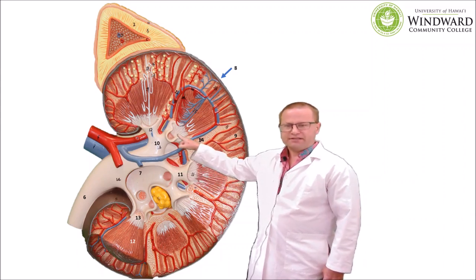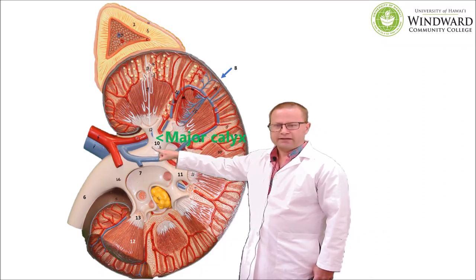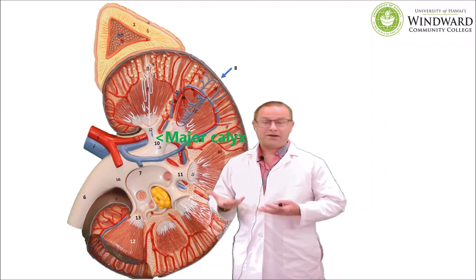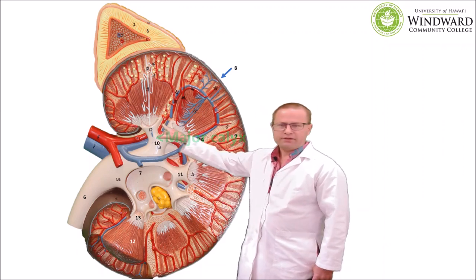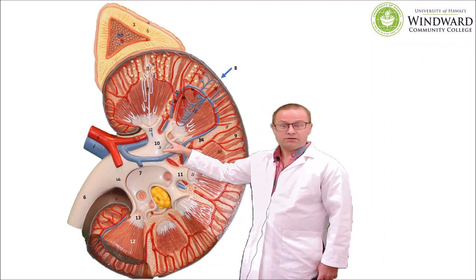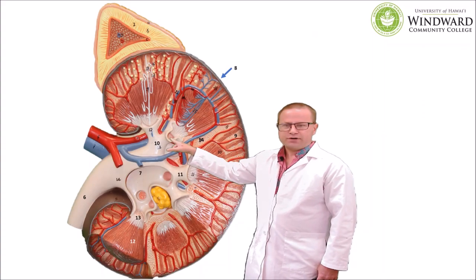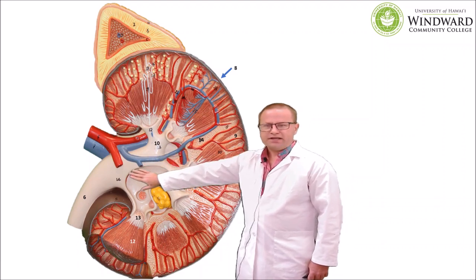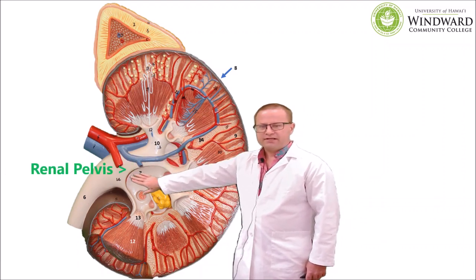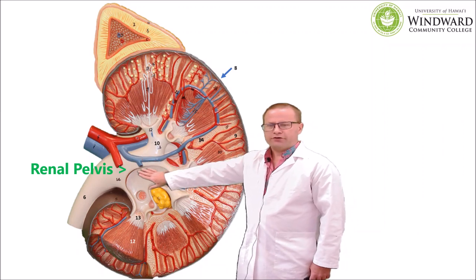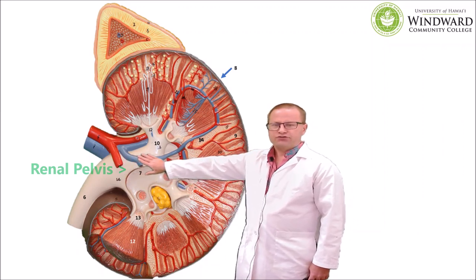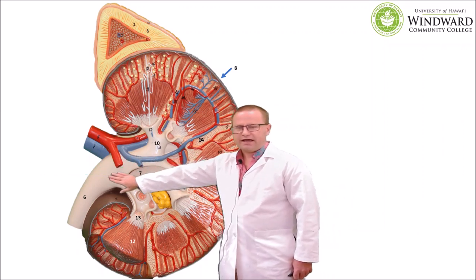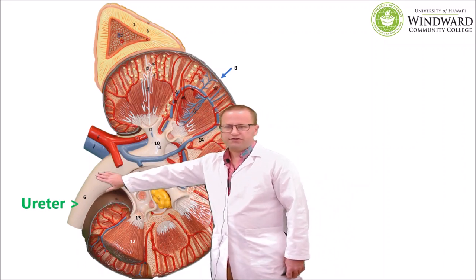We have both minor calyces, and two minor calyces drain into the major calyx. The way to remember the minor calyx is that if you look at it closely, it looks like Shrek ears. The minor calyces drain into the major calyx, which then drains into an area called the renal pelvis — this is the main collecting area for urine that's going to leave the kidneys. Draining out of the renal pelvis we then have our ureter, which goes towards the urinary bladder.